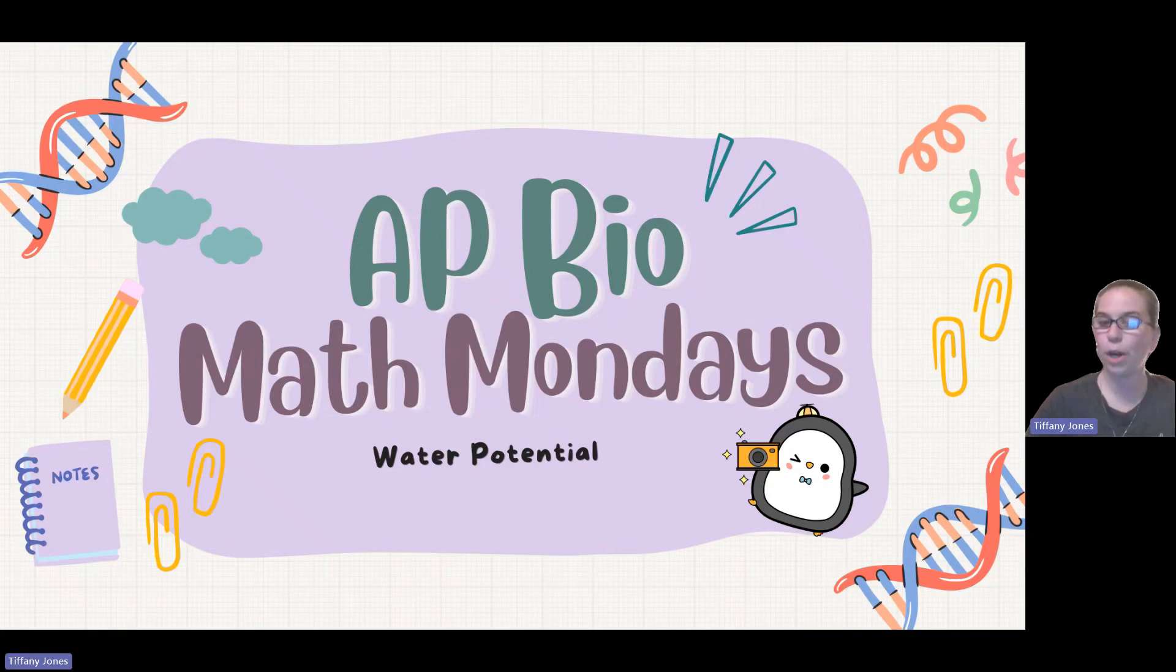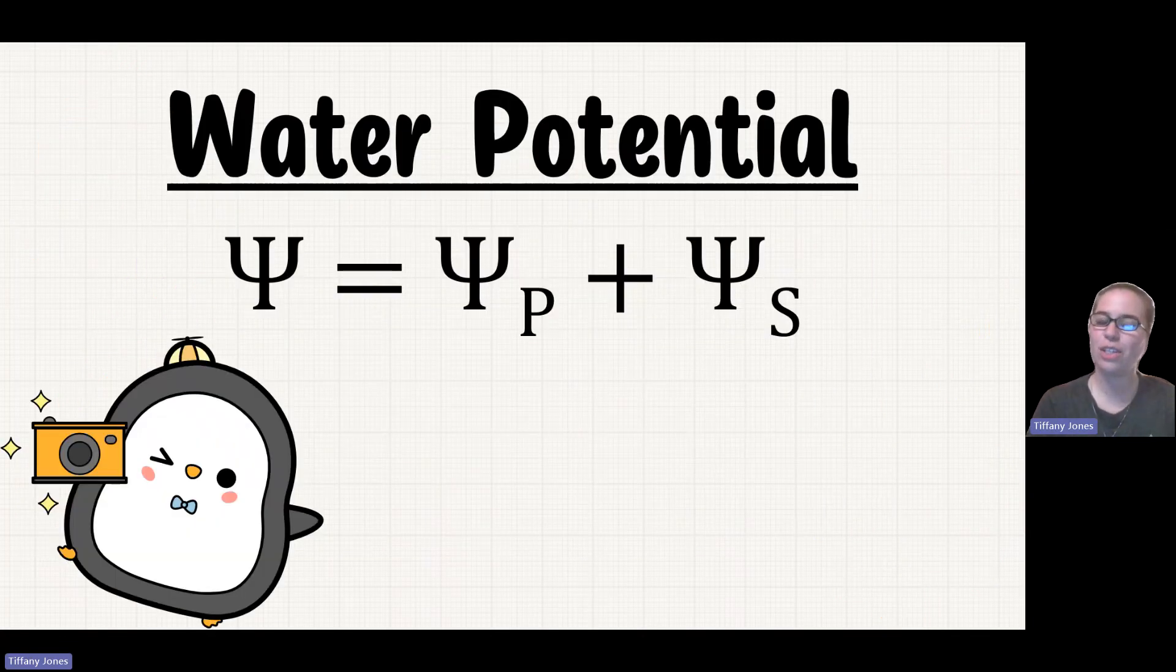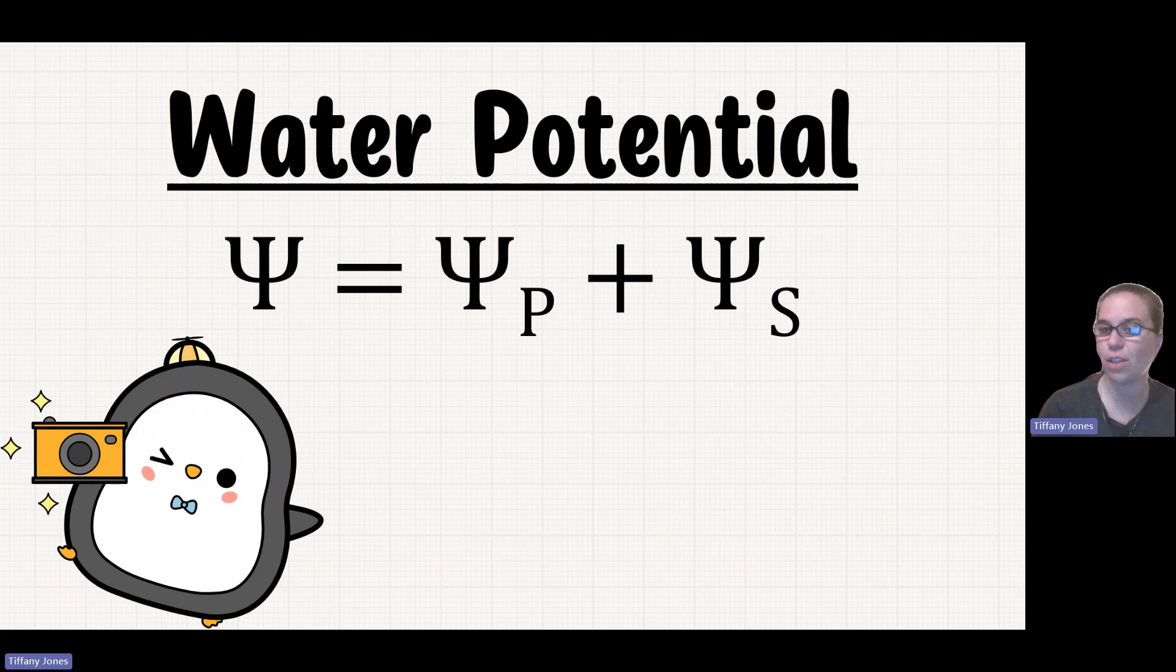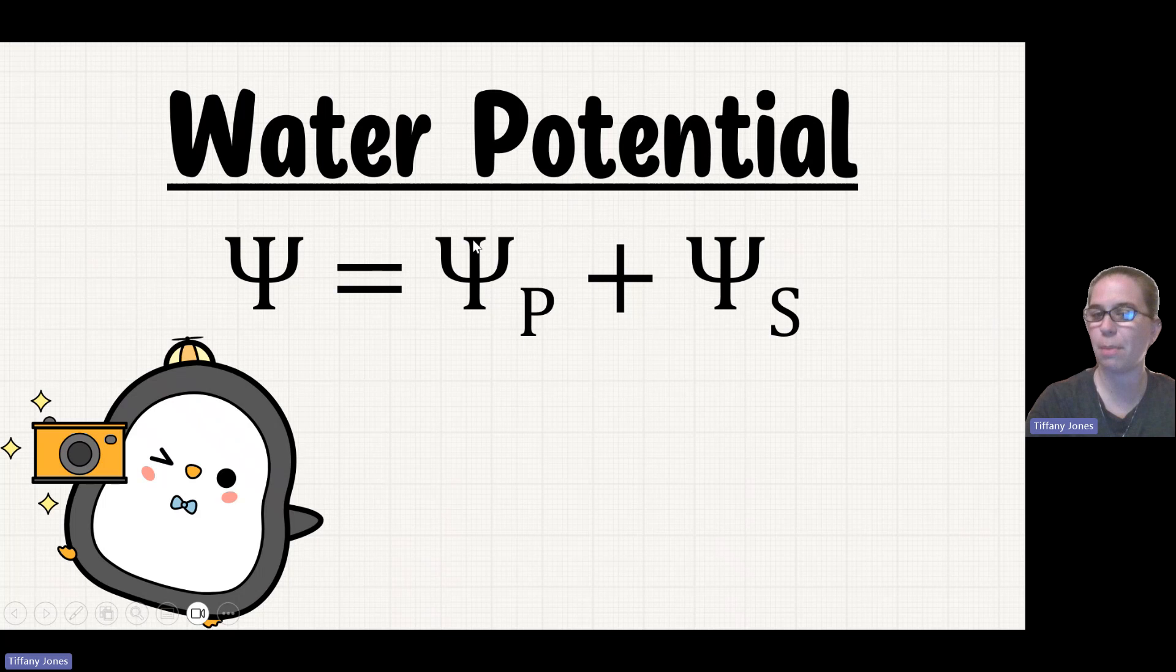What's up everyone? Today we're looking at water potential. The water potential is going to be equal to the pressure potential plus the solute potential. This little P right here stands for our pressure and the little S stands for solute. So I know that this is my pressure potential and this is my solute potential.